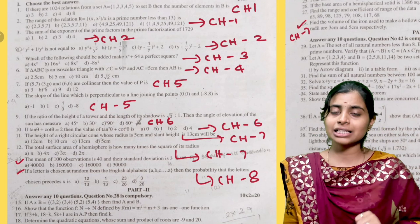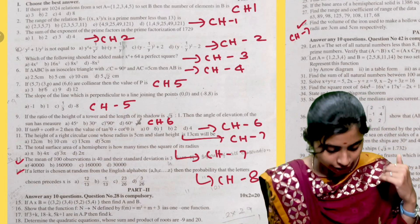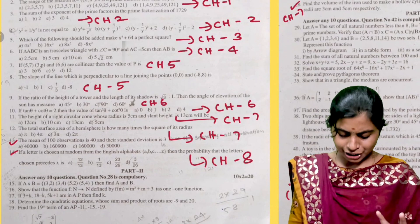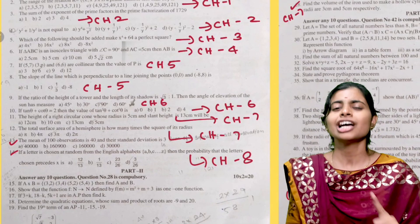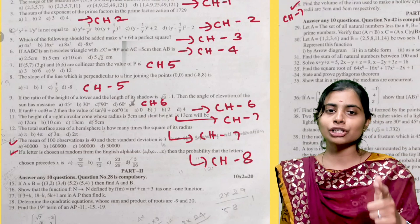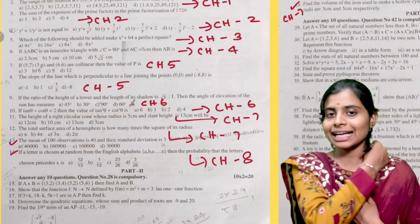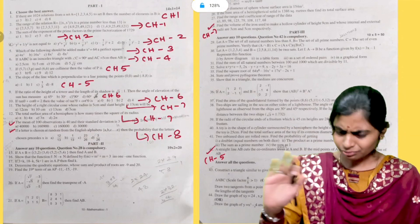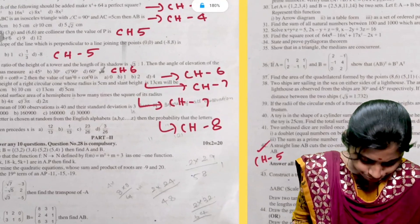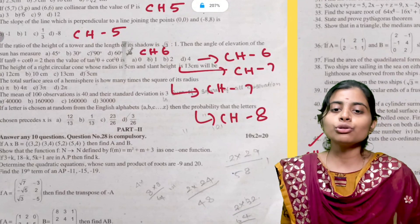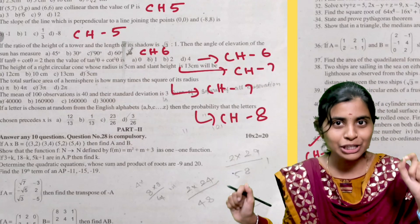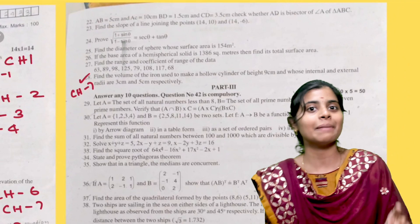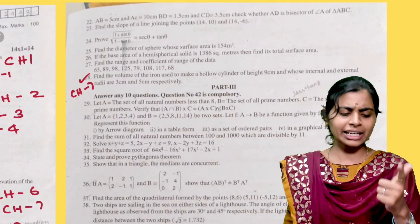Chapter 6 has 2 questions — that is trigonometry. Then mensuration, Chapter 5 has 1 question. There are 2 questions for 1 mark, and 2 marks — compulsory questions. 28 questions total. That is Chapter 7, mensuration.